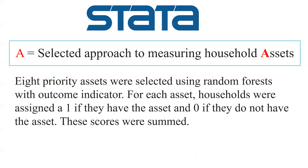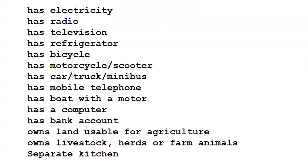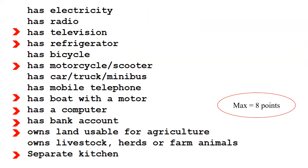For the asset component, eight priority assets were selected using random forest with an outcome indicator. The outcome variable could be stunting, exclusive breastfeeding (EBF), or any nutrition indicator. For each asset, households were assigned a one if they have the asset, otherwise zero. Using random forest, we identify the best eight assets, giving a maximum of eight points.